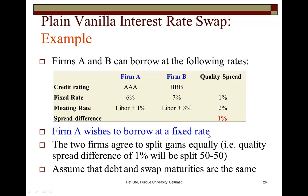In this transaction, Firm A would actually prefer to take out a fixed rate loan, which would cost it only 6%. However, to ensure that the effective cost of borrowing is lower for both firms, Firm A should borrow in the loan market in which it has the greater comparative cost advantage — and that is in the floating rate market, where the quality spread is higher than in the fixed rate market.